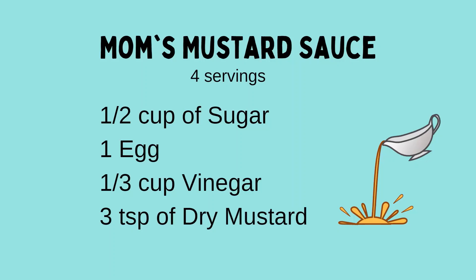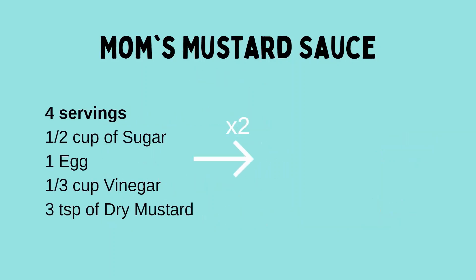So proportions matter if I want to increase or decrease the amount of sauce I'm making. If I'm having eight people over for supper, I'm going to need to double the recipe. But if I double the recipe, I need to make sure that I double all of the ingredients. If I mess any of that up, this sauce will taste way too bitter — too much vinegar or too much dry mustard — or way too sweet if I add too much sugar. So let's give this a go. Doubling the recipe means I am multiplying by two. It's got to be a multiplicative relationship.